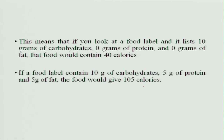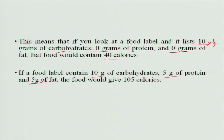If we look at a food label: if it lists 10 grams of carbohydrates with no protein and no fat, then the energy provided is 10 × 4 = 40 kilocalories. Whereas if the food contains 10 grams of carbohydrates, 5 grams of protein, and 5 grams of fat, you calculate: 10×4 + 5×4 + 5×9 = 105 kilocalories of energy.